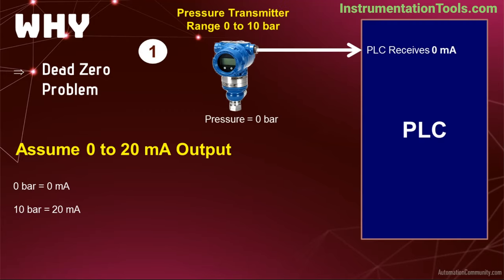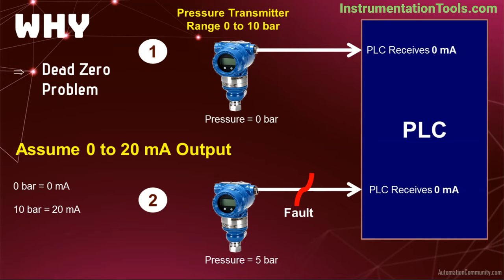Case 1: Assume the process pressure is 0 bar, so the pressure transmitter sends a 0 mA signal to the PLC, and the PLC displays 0 bar pressure to the operator. Case 2: Consider a fault in the pressure transmitter loop. The fault may be a broken wire, faulty transmitter, noise, high wire resistance, or any other problems. Assume the wire is broken between PLC and transmitter, and the process pressure is 5 bar. Because of the broken wire, the PLC receives 0 mA instead of 12 mA. The PLC thinks it receives 0 mA and displays 0 bar, but in reality it should be 5 bar. This is the dead zero problem.